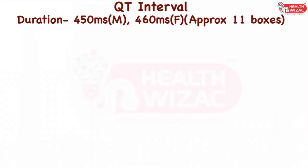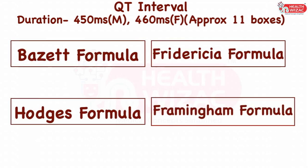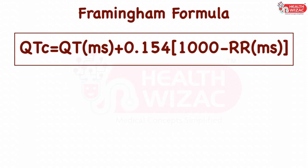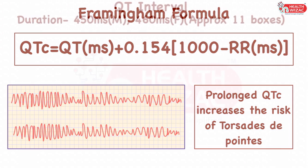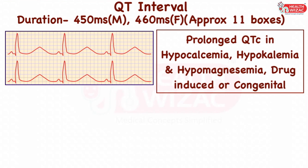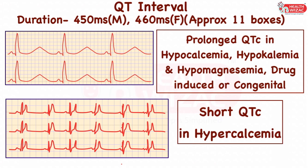QT interval represents the entire ventricular contraction phase from impulse activation to recovery, with a duration of 450 milliseconds in males and 460 milliseconds in females. One of the most accurate methods to calculate corrected QTc is by the Framingham formula: QTc = QT interval (ms) + 0.154 × (1000 − RR interval in ms). Increased QTc raises the risk of torsades de pointes. It is prolonged in conditions like hypocalcemia, hypokalemia, hypomagnesemia, anti-arrhythmic drugs, or may be congenital. QTc is short in conditions like hypercalcemia.